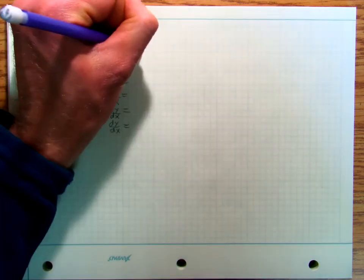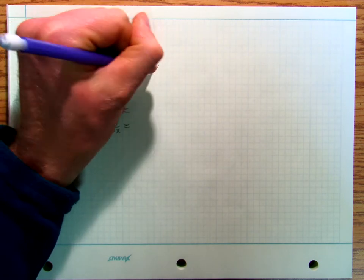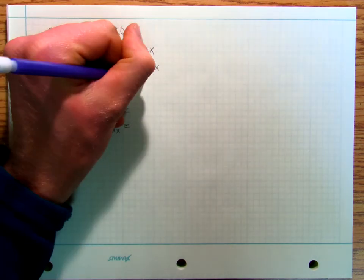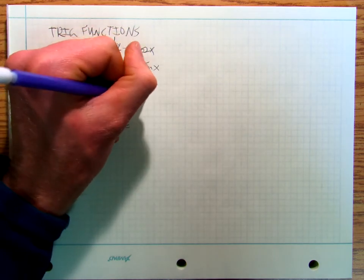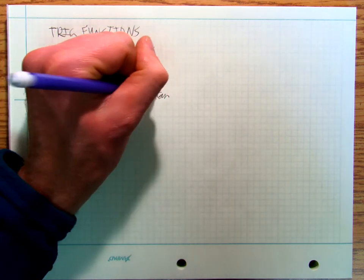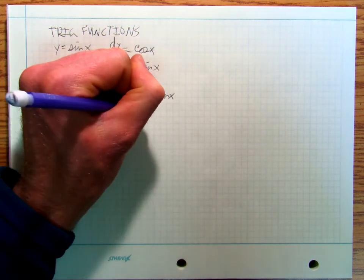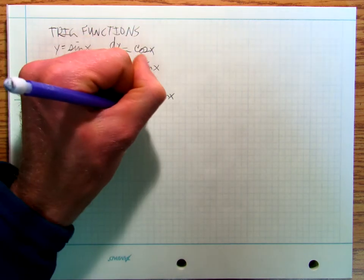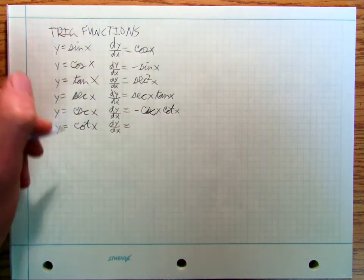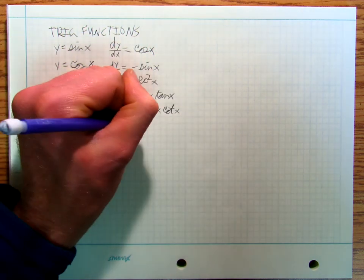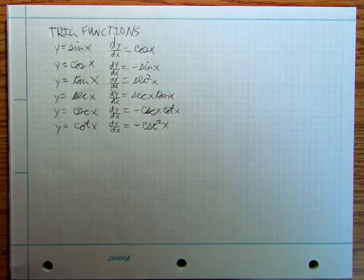Derivative of sine x is cosine x. Derivative of cosine x is minus sine x. Derivative of tangent x is secant squared x. Derivative of secant x is secant x tan x. Derivative of cosecant is negative cosecant x cotangent x. Derivative of cotangent x is negative cosecant squared x.